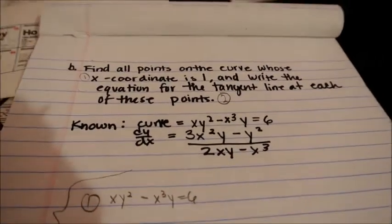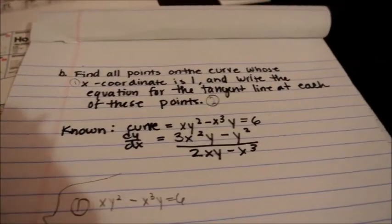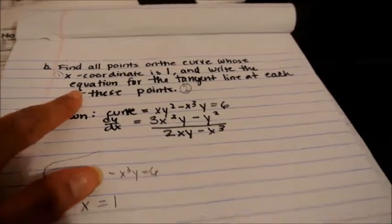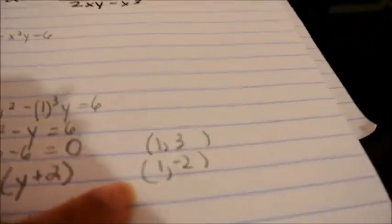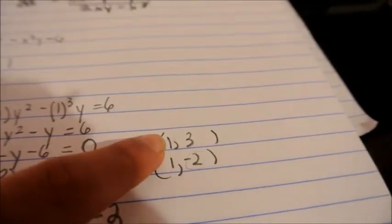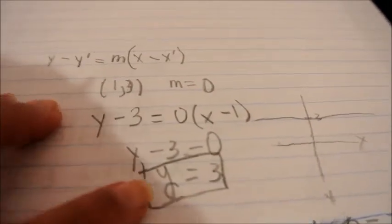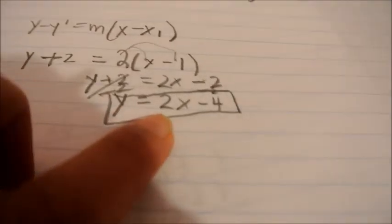So both parts of part 2 are done, and we are complete. So we found the points at which x is 1, and we found the line of the tangent of those points.